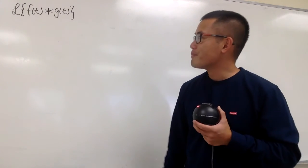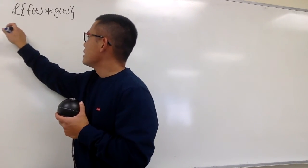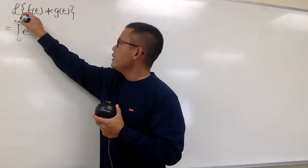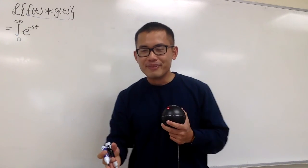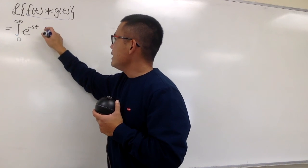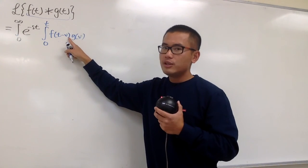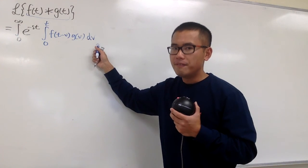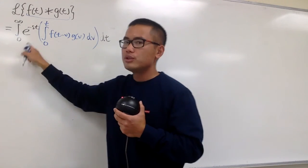How can we get that? Well, why don't we just go back to the fundamental — namely, let's use the definition of Laplace first. By the definition of the Laplace transform, this is going to be the integral from 0 to infinity of e to the negative st. And the convolution is also an integral: it's the integral from 0 to t of f of t minus v times g of v, and we integrate with respect to v first, and then dt at the end.